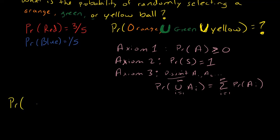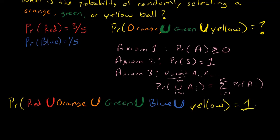So the probability that I get a red, or orange, or green, or blue, or yellow ball is the same as my sample space, because my sample space only contains these colored balls. This is the probability of my sample space, which is 1 by axiom 2.